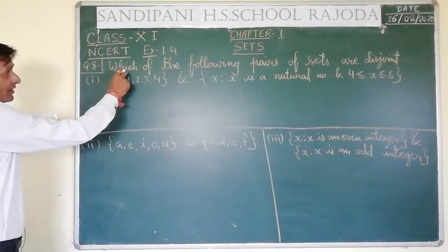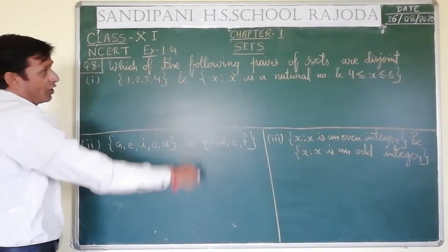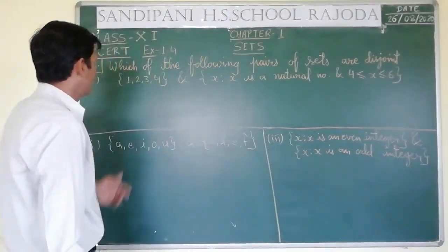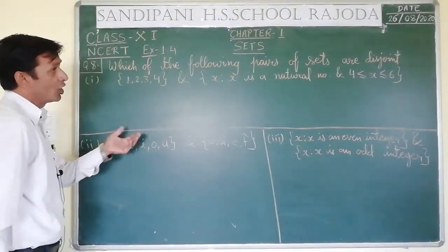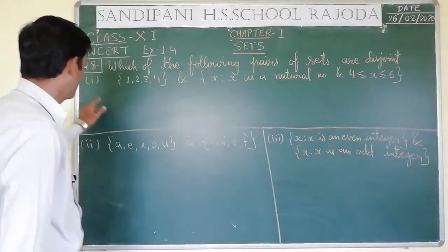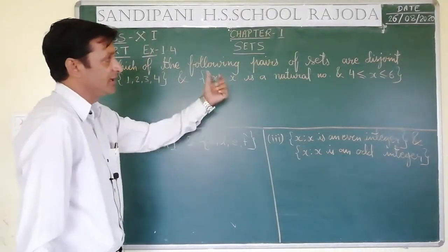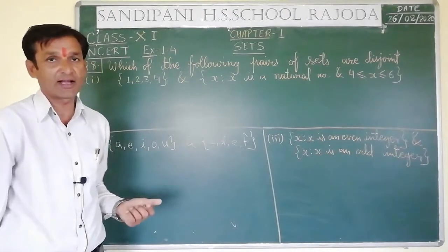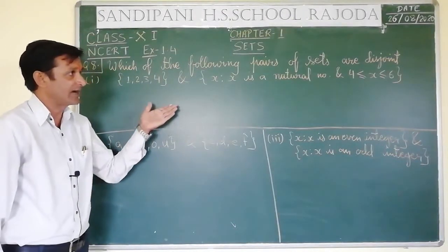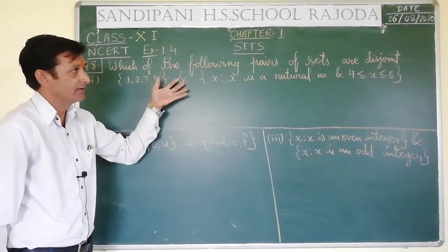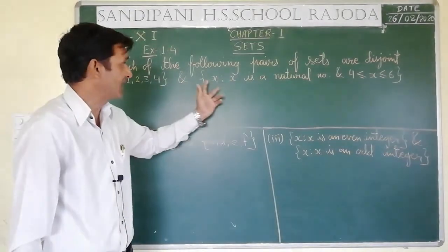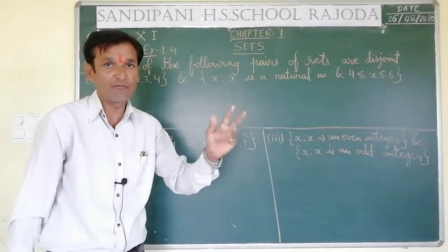Now see question number 8: which of the following pairs of SETS are disjoint? We have to know which pair of SETS is disjoint. There are three sub-questions — first, second, and third. We will check here which sets are disjoint.